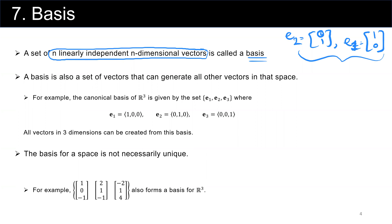A basis is also a set of vectors that can generate all other vectors in that space. I would call this an intuitive definition of basis. Here we have E sub 1 and E sub 2 in the two-dimensional space. Let's see if we can create any other arbitrary vector in the two-dimensional space using these two bases.